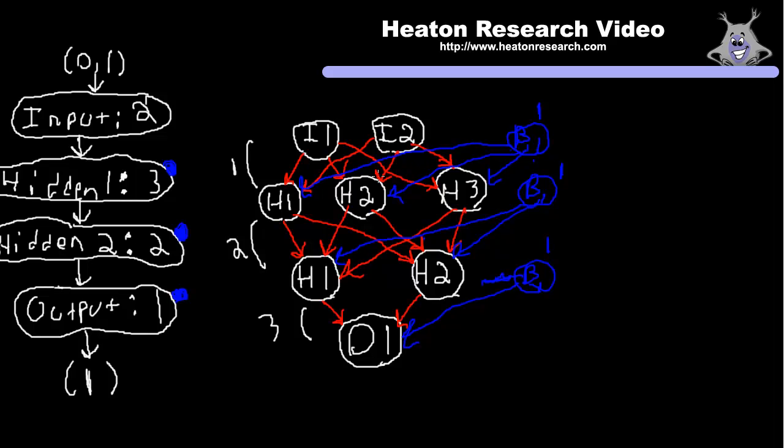We're going to take all of the weights for the first weight matrix, also called a synapse in Encog terminology. Then we're going to calculate what that output is. That output is going to be three numbers which are fed into the second weight matrix, and we're going to calculate that. And it's going to go on to the next layer, and then finally to the output layer. And since we only have one output neuron, this is going to give us one single output value.